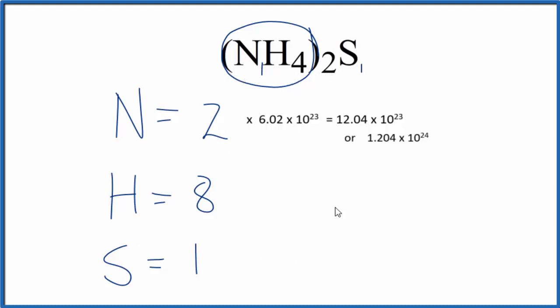Occasionally, you'll be asked to find the number of ammonium ions in this ammonium sulfide. So the ammonium ion, that's NH4, and it has a positive charge. And you can see that we have 2 of these ammonium ions here.